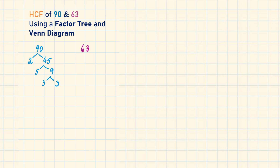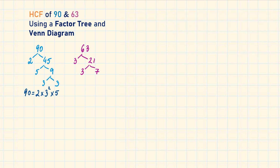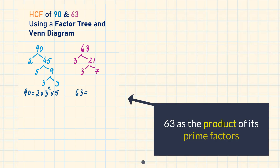For 63: the first branches are 3 and 21, and the branches of 21 are 3 and 7, both prime, so we stop. We often need to write numbers as the product of their prime factors — 'product' means 'times', and prime factors are what we see at the end of the branches. So 90 as the product of its prime factors is 2 × 3² × 5, and 63 is 3² × 7.